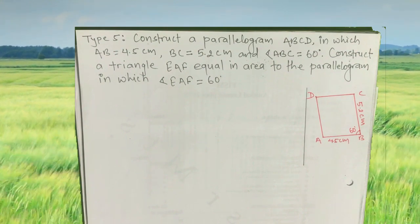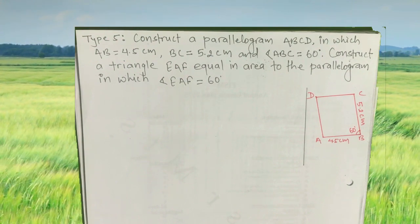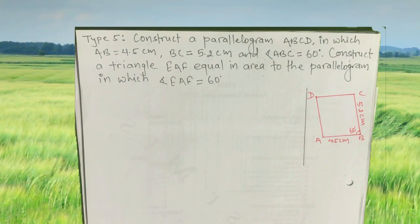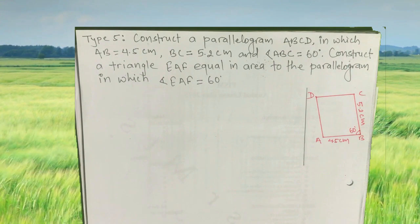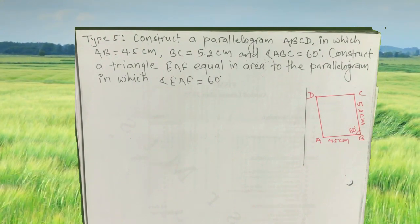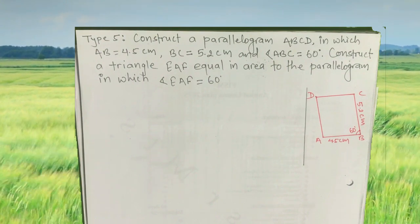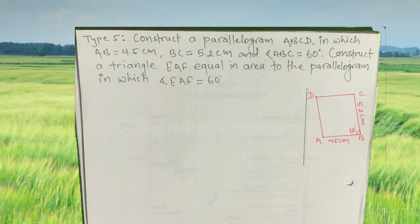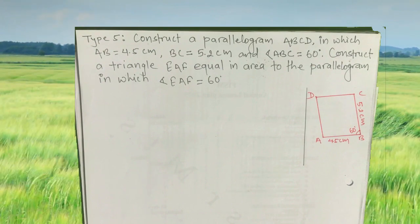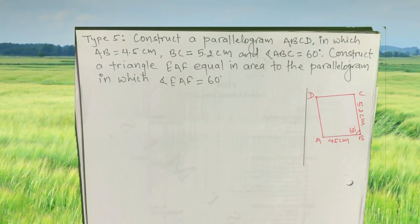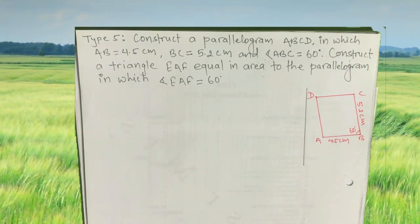Today we are going to talk about construction type 5 question. The question is: construct parallelogram ABCD in which AB is equal to 4.5 centimeter, BC is equal to 5.2 centimeter, and angle ABC is equal to 60 degrees. Construct triangle EAF equal in area to the parallelogram, in which angle EAF is equal to 60 degrees. First we have to construct parallelogram ABCD, and then construct triangle EAF which is equal to parallelogram ABCD in area.